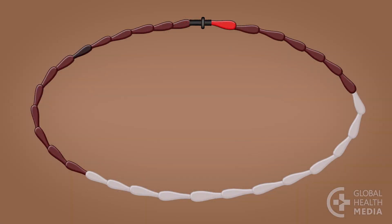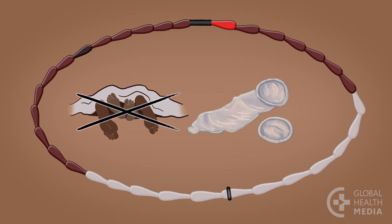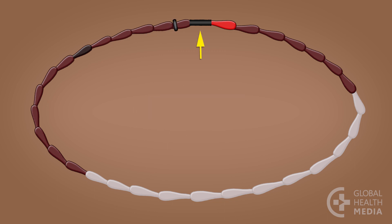To recap: start using cycle beads on the first day of your monthly bleeding and move the rubber ring to the red bead. Each day, move the rubber ring to the next bead. Brown bead days are safe days — you can have sex. White bead days are not safe — you need to avoid sex or use a condom. Then brown bead days are safe again. Your cycle is too short if you have your monthly bleeding before you reach the dark brown bead, and too long if you finish the beads without seeing your monthly bleeding.